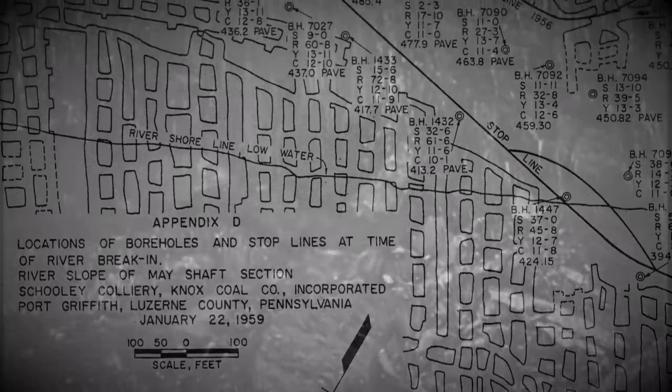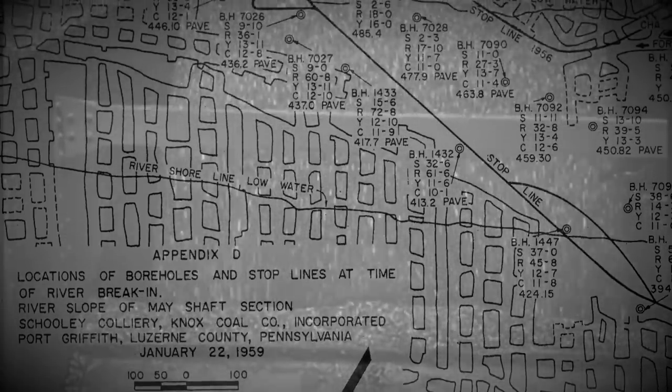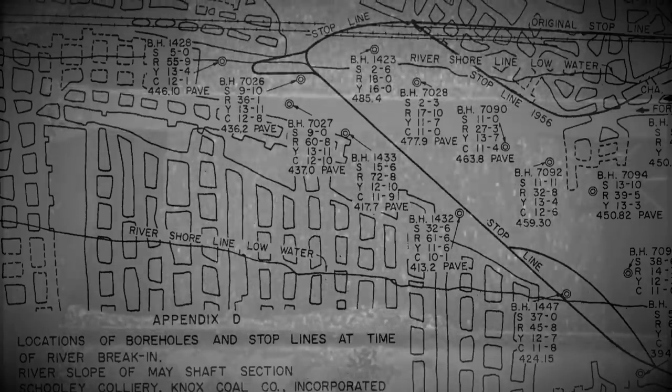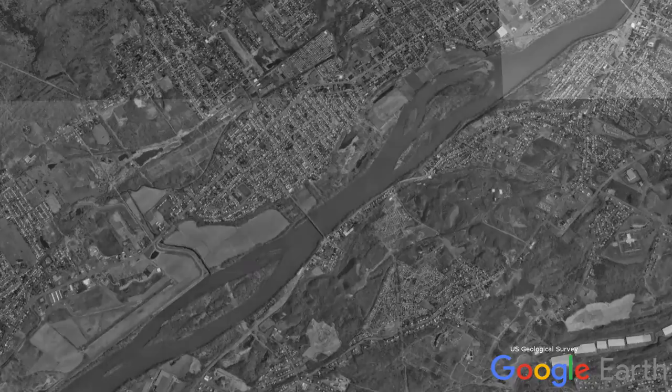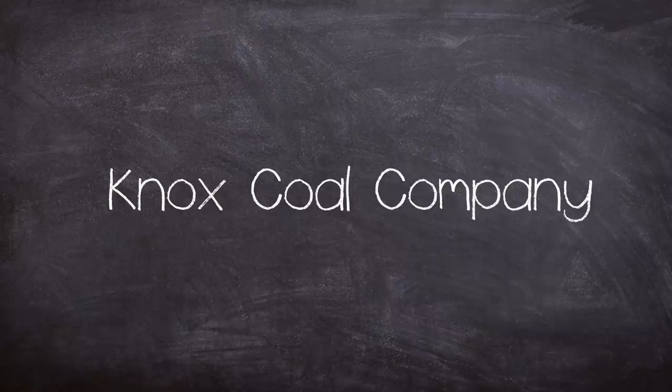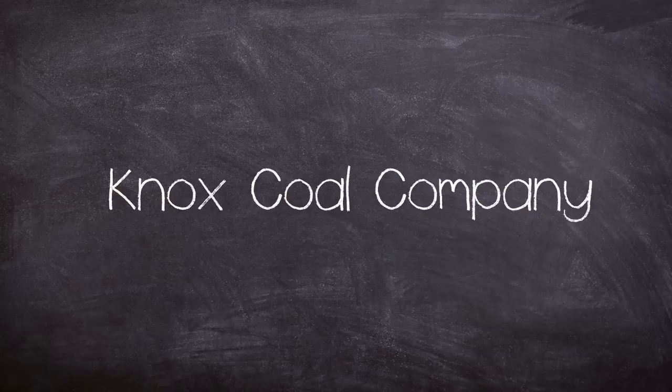In and around the Port Griffiths area, multiple mine owners and contractor companies operated an intricate connected maze of mine shafts along and under the Susquehanna river, incorporating Wintermoot and Monocannic islands. The Knox Coal Company was one of these operations, cutting costs and responsibilities at every turn.